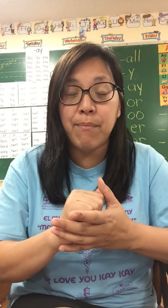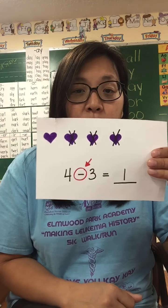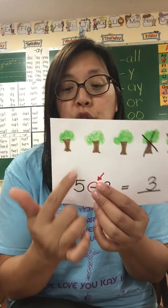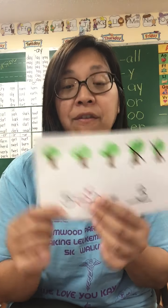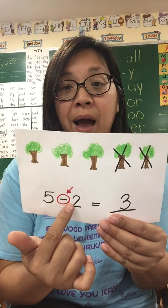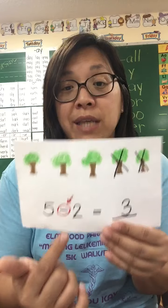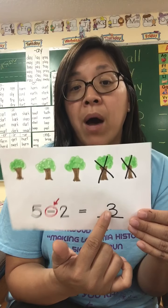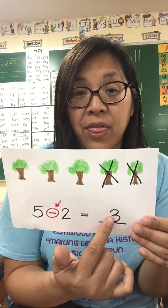With subtraction, you start with a group of objects and take away however many the problem asks. Pay attention: the first number tells you your starting number — how much is in your group. The second number, behind the minus sign, tells you how much to take away. The last number, after the equals sign, is your answer — how much you have left. That is what subtraction is.